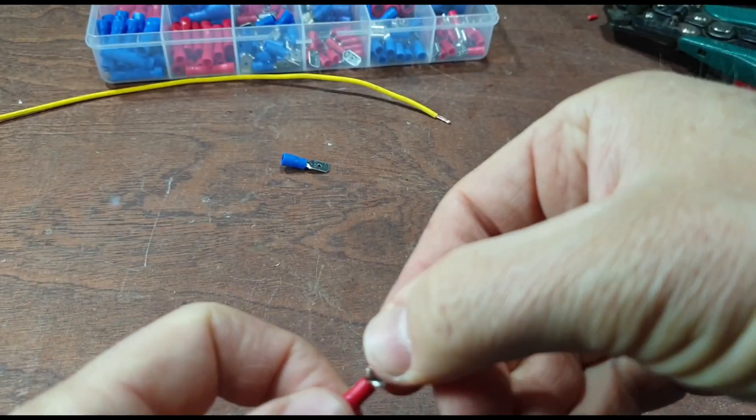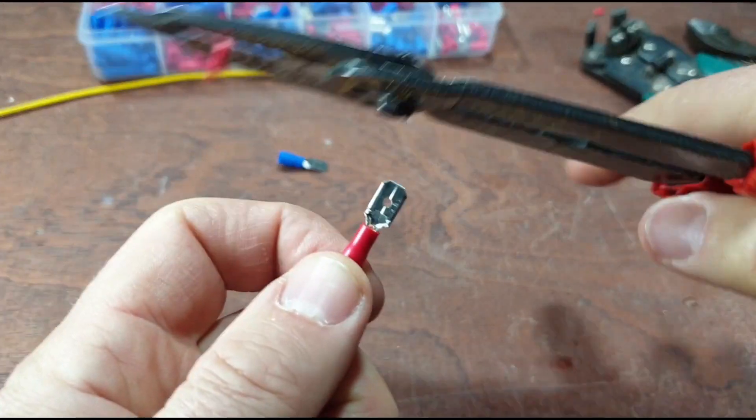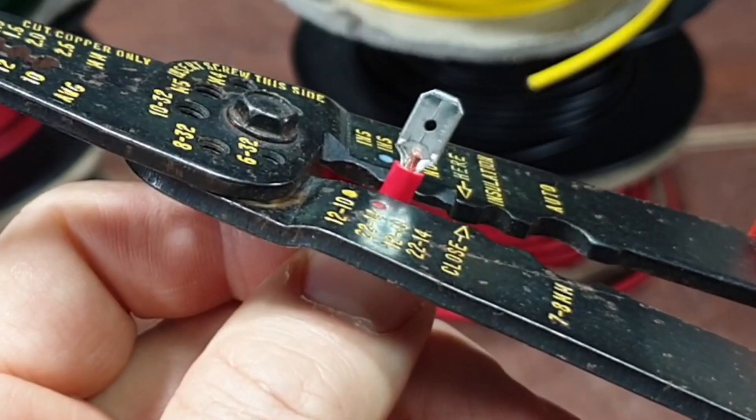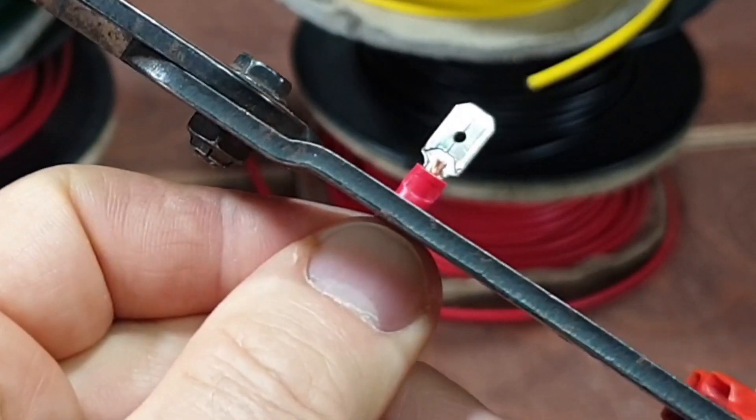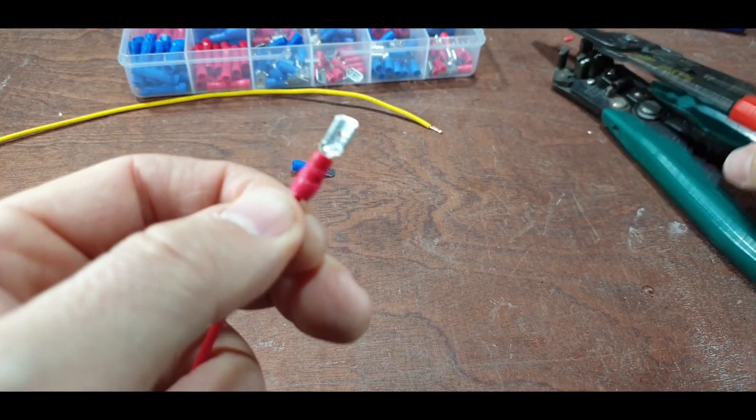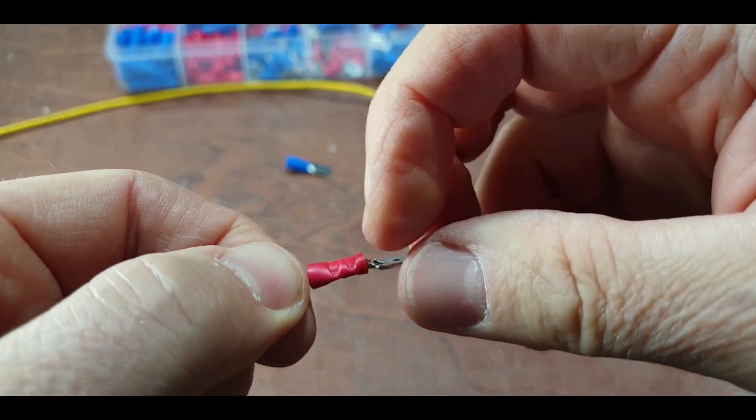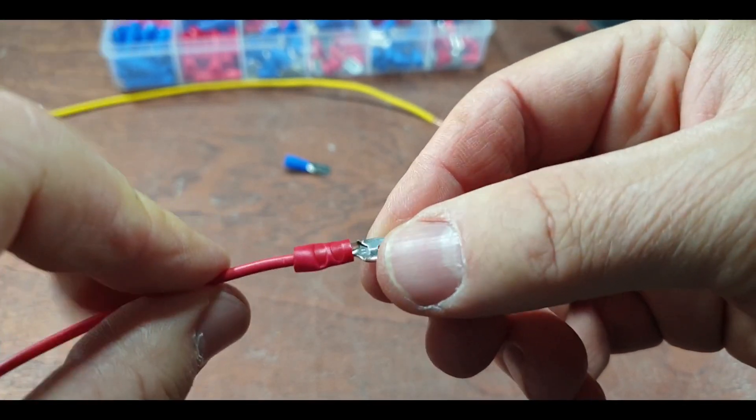So then if we—if we go to these, I'll show you. Select the red and then you crimp. Crimp the front and crimp the back, because what you're doing is you're crimping the copper and you're crimping the outer casing.